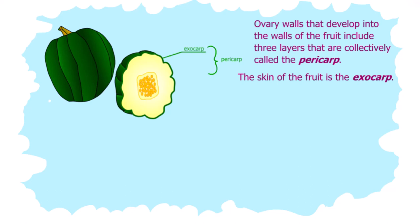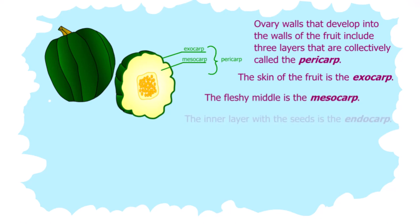The skin of the fruit is the exocarp, the fleshy middle is the mesocarp, and the inner layer with the seeds is the endocarp.